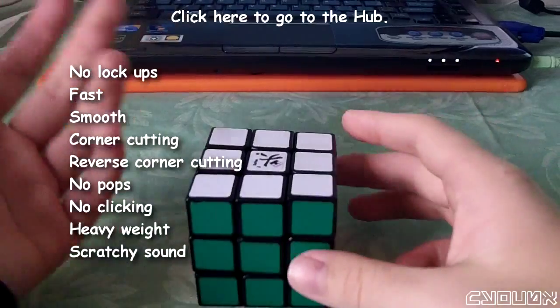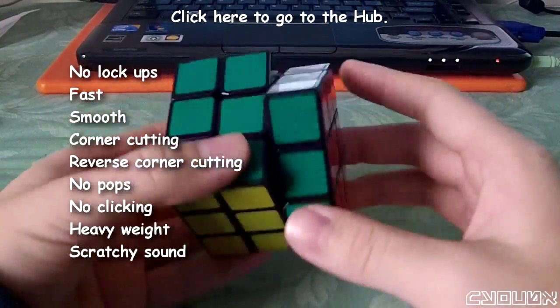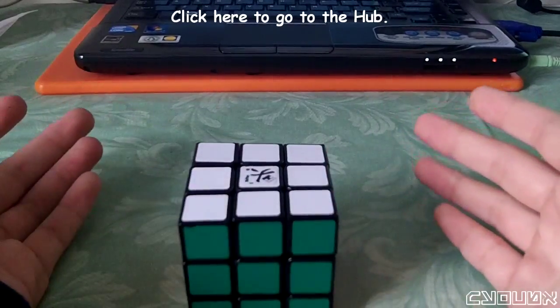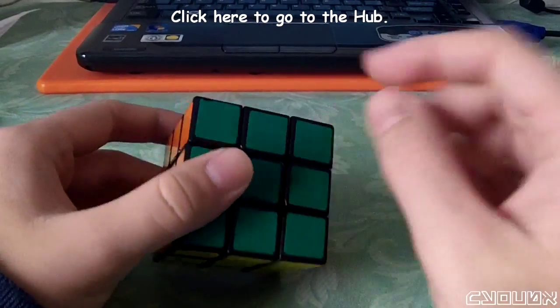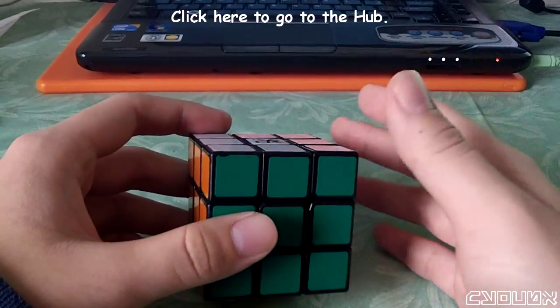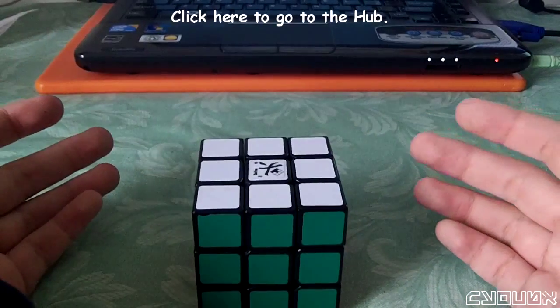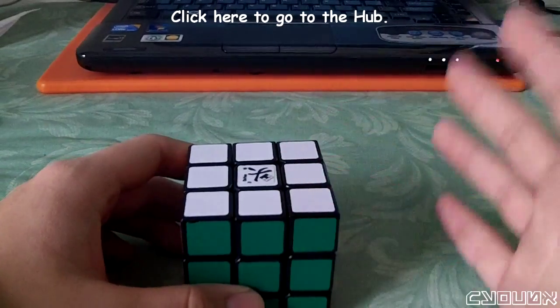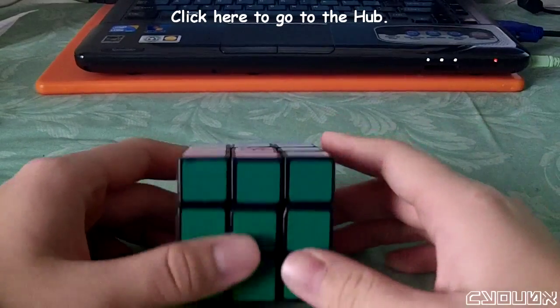We'll want to stop the popping, the clicking, we'll want to add some weight, and we want to change the sound. So now we look at dependencies. To stop the popping, we're going to need to add some sort of mechanism to the cube. This means added material. This makes me think that I can stop the popping and add the weight in a single mod. These two are therefore going to be linked together.